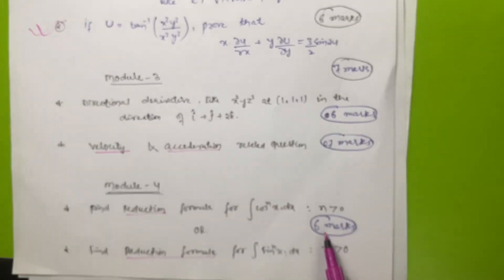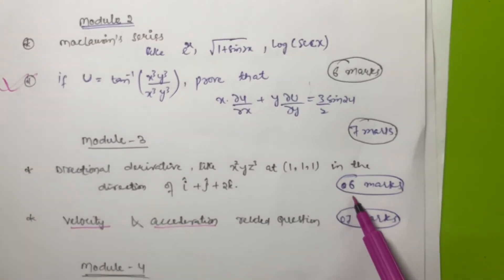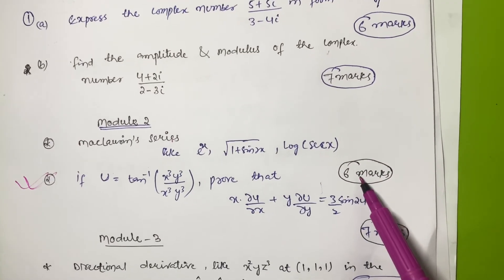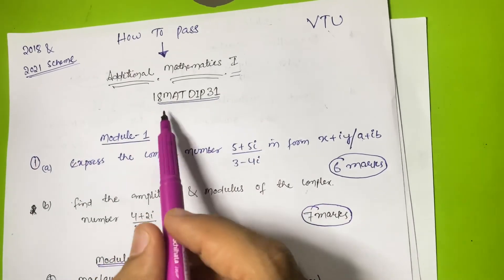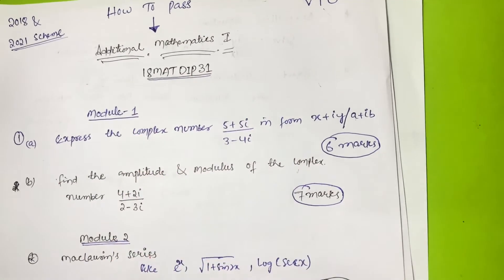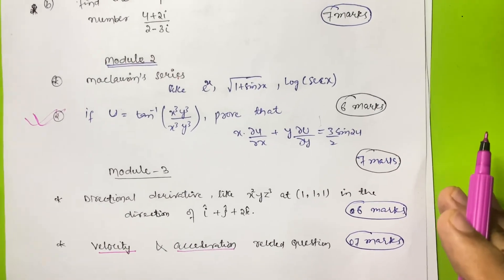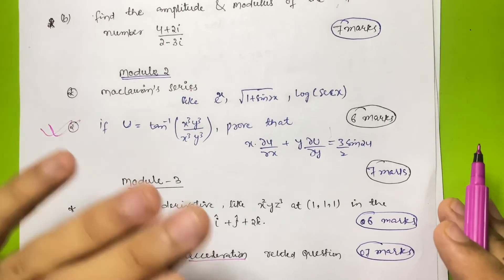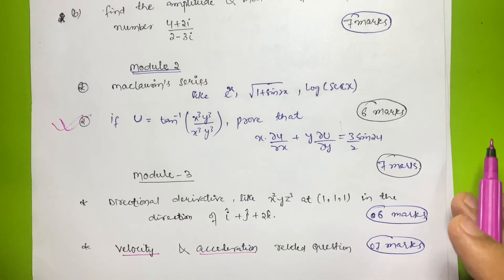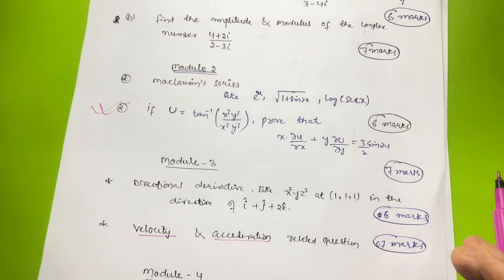So in total: Module 4 gives 6 marks, Module 5 gives 13 marks, that is 19. Add Module 3's 13 marks to get 32, plus Module 1's 13 marks is 45, plus Module 4's 6 marks is 51, plus 7 more is 58 marks. You can easily get 58 marks in this subject - 18 MAT DIP 31. Just follow these tricks, keep your full attention, and you can clear this subject with flying colors. If you have queries, ask in the comment section. Thank you very much.